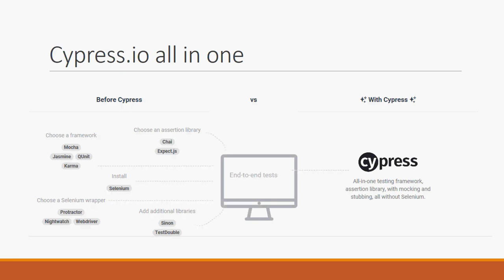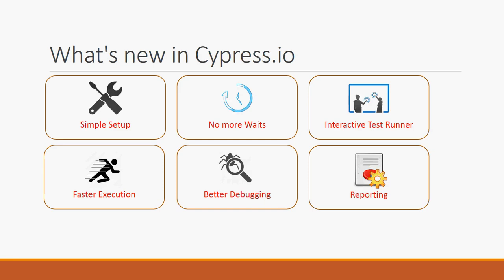Cypress is an all-in-one solution. It has its own reporting mechanism, its own interactive debugging facility, and uses Chai and Expect.js as the assertion library. It can be integrated with many frameworks including Mocha, Jasmine, QUnit, and Karma.